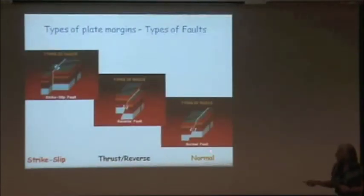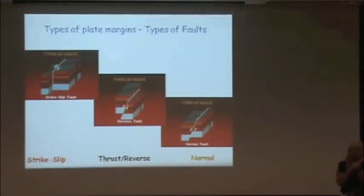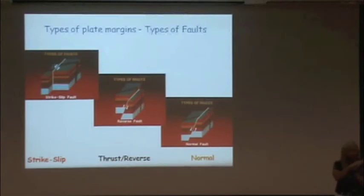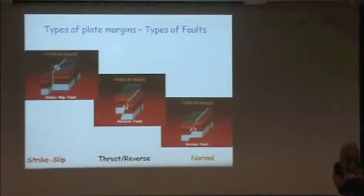Normal faults are called normal faults because the hanging wall — the uphill side — goes down. That's normal. Things go from up to down under the force of gravity. A thrust fault or reverse fault is called a reverse fault because the uphill side goes up — that's backwards, so we call it reverse. The strike-slip faults are so named because the slip is along the strike of the fault.